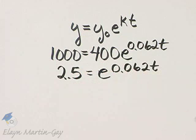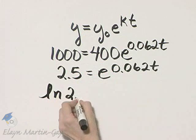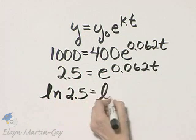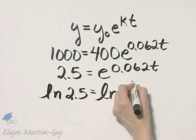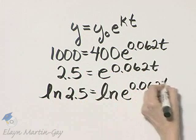I'm going to take the natural log of both sides because the natural log of 2 and 5 tenths, then, is equal to the natural log of E to this power. And what's so special about the natural log?